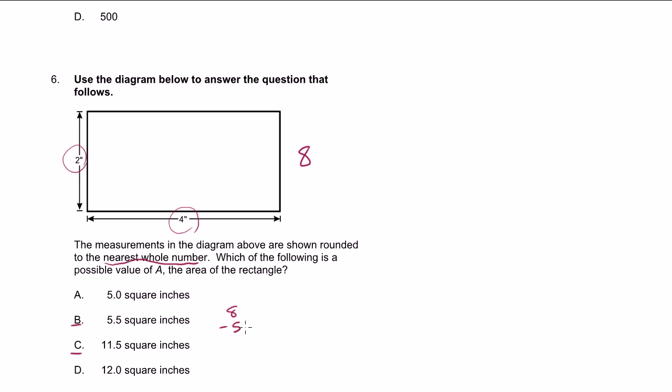So 8 minus 5.5, that's what? 8 minus 5 is 3, so this is 2½ inches. So we're 2½ inches from this one. And we are 3½ inches from this one. So if I was stuck for time, I would go with this one.